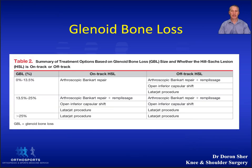The authors of the GTIMS score also perform operations such as open capsular shift and add a remplissage to an arthroscopic Bankart repair — options not included with the ISIS score. These give the same outcomes without resorting to a Latarjet procedure.